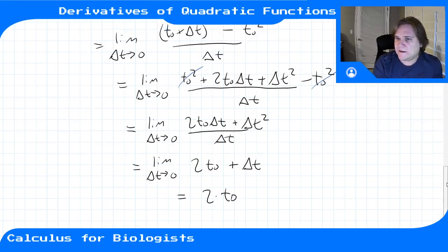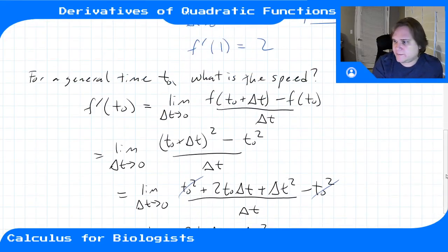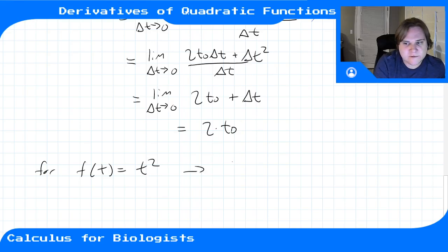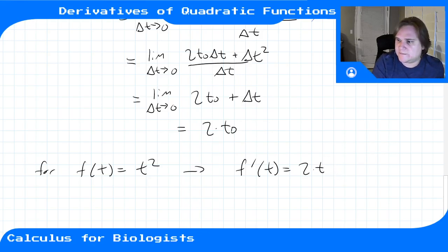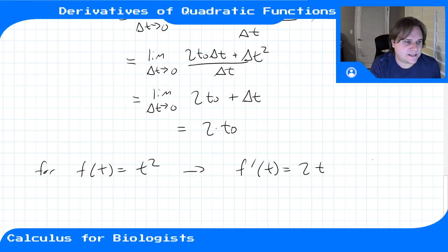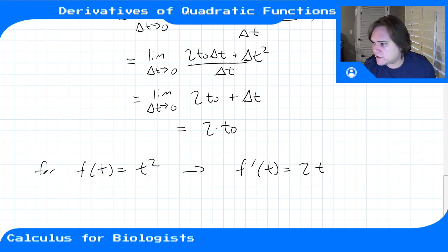So for a general time t₀, the derivative is 2t₀. For f(t) = t², we found that the derivative of this function is the function 2t. So for every point t₀, this was the derivative, and the derivative function is 2t.